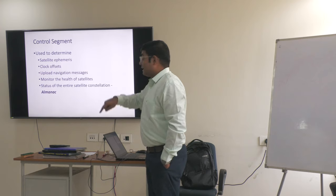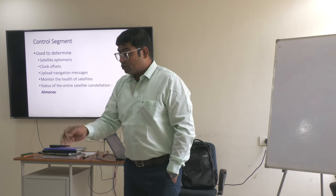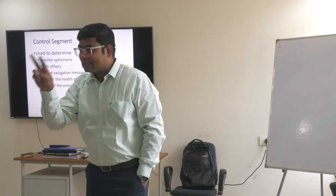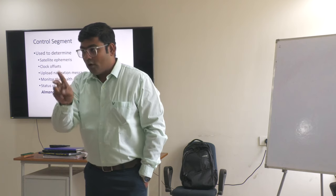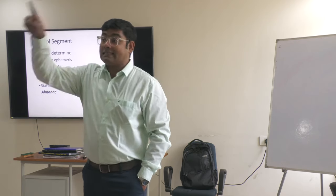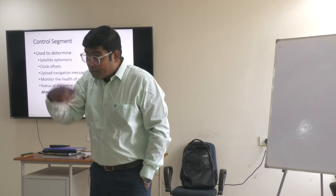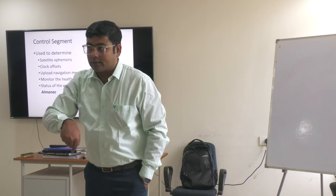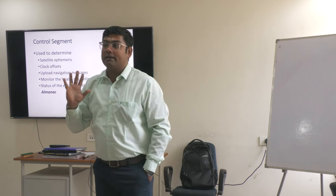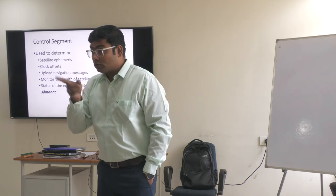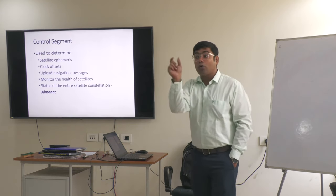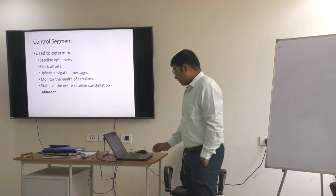The control segment also monitors the status of the entire satellite constellation, which is known as the almanac. The almanac is the data about the entire satellite constellation. Each satellite sends data regarding the location of other satellites in the entire constellation — that is almanac data. It also sends very precise information about its own specific location in its orbit — that is ephemeris data. The entire constellation is the almanac data; the specific position of a satellite at a particular point in time is the ephemeris data. These two types of information, along with the coded signals, are very important for GPS to work.